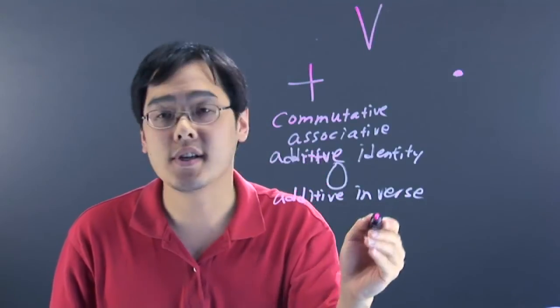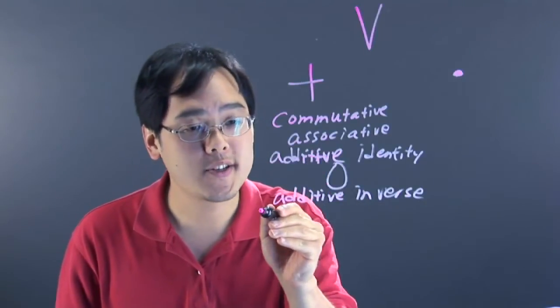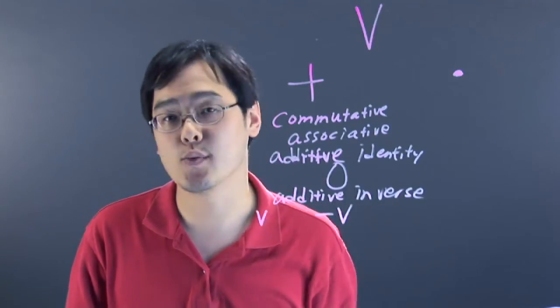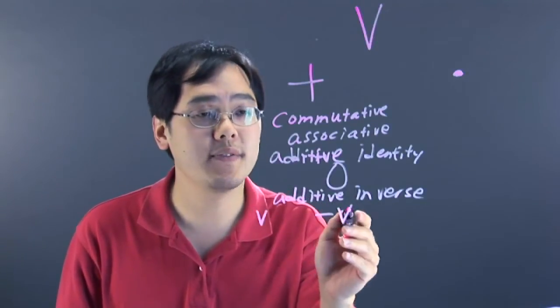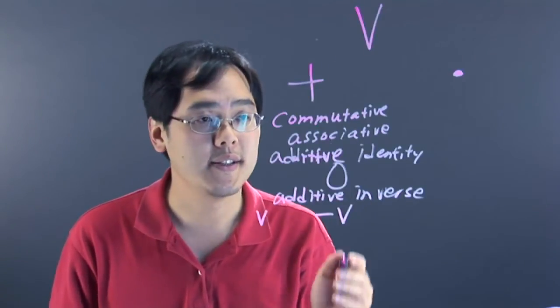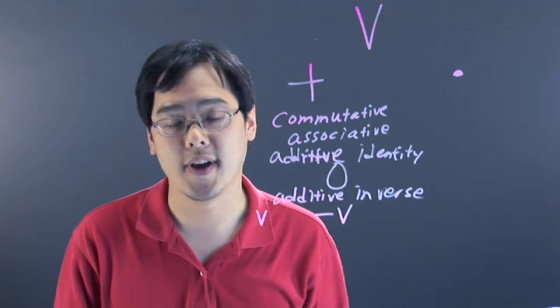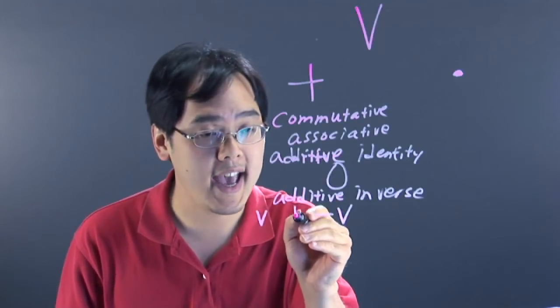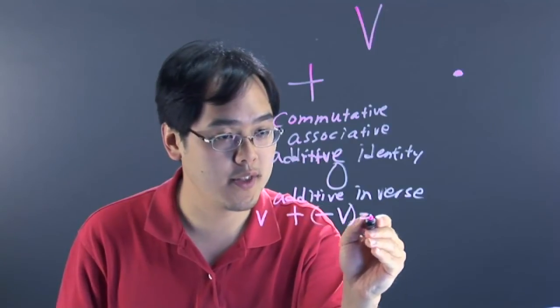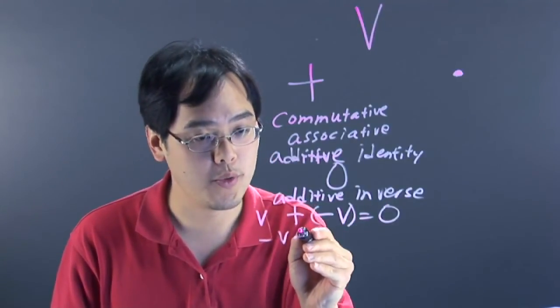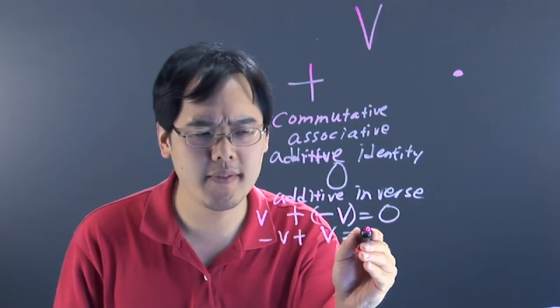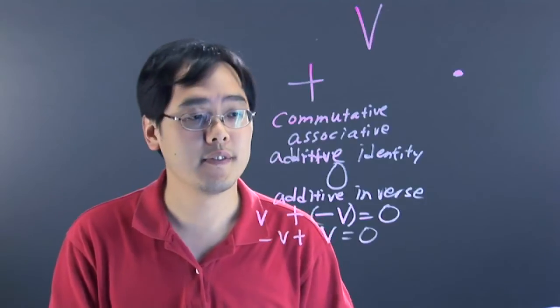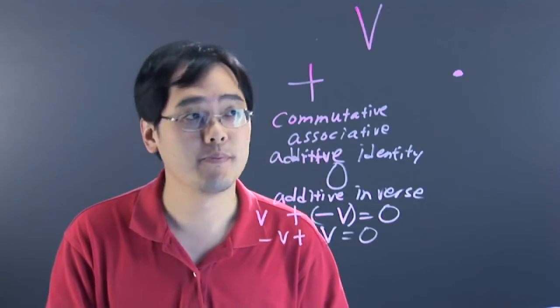What that means is for every vector v, there must be a negative v that belongs in the set. If negative v does not belong in the set, then it wouldn't satisfy vector addition. If negative v is in it, you can add the two vectors together and get zero both ways. It sounds obvious, but not every set will have the negative additive inverse, depending on how it's defined.